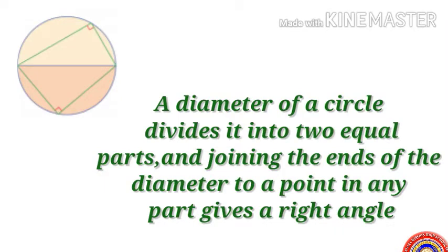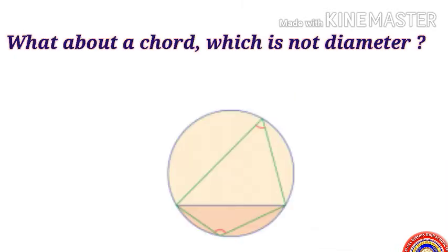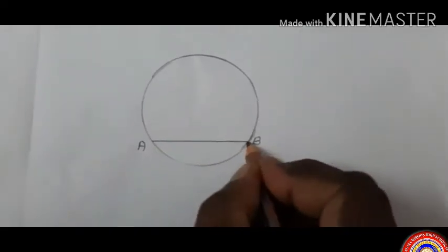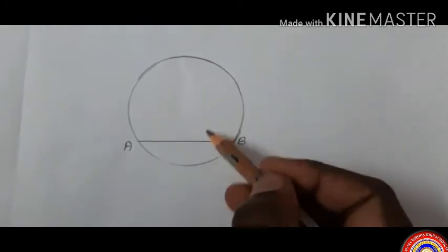A diameter of a circle divides it into two equal parts, and joining the ends of the diameter to a point in any part gives a right angle. What about a chord which is not a diameter? The parts are not equal, nor are the angles right. Here AB is the chord.